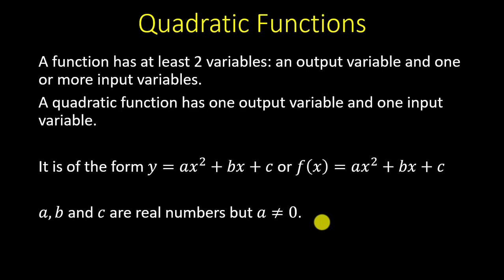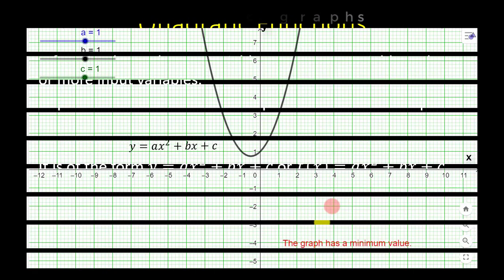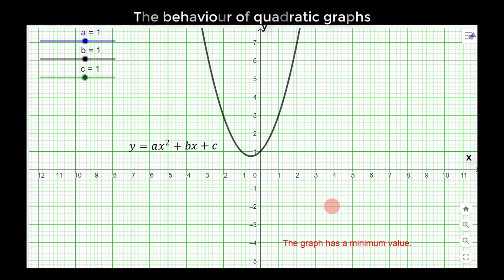Let us look at the behavior of a quadratic graph in relation to the coefficient of x squared, which is a, the coefficient of x, which is b, and of course the constant c. As you can see, I have three slides here — slide a, slide b, and slide c. Currently the value of a is one. We are going to slide this value to the left and right to see how the graph behaves.